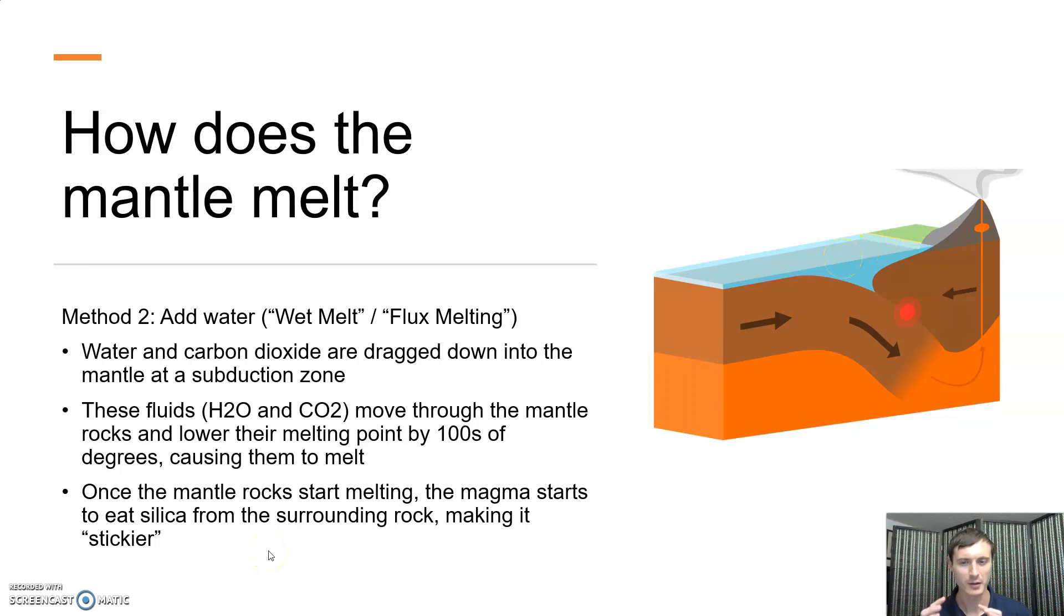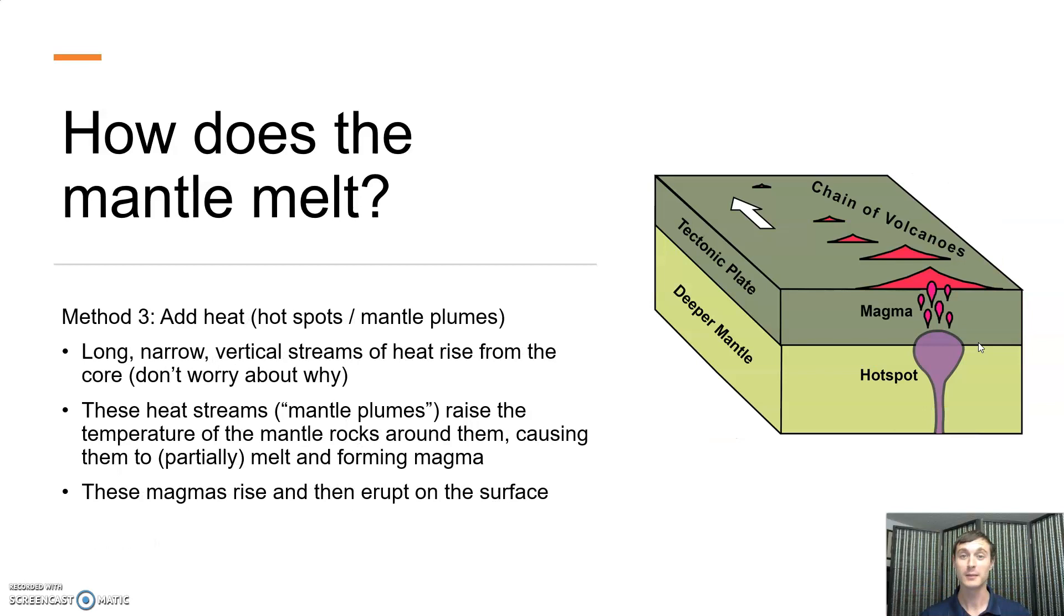And it's important to note here there's this other process. So as the mantle rock starts melting, it starts to sort of eat, chemically eat, the silica in the rocks around it. And this has the effect of making the magma stickier and thicker and harder to move.